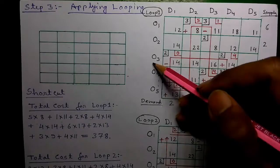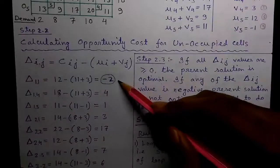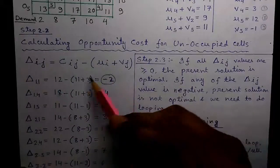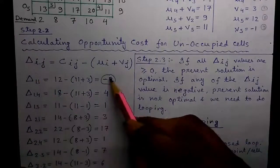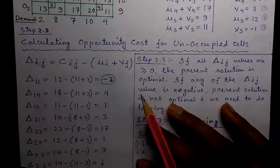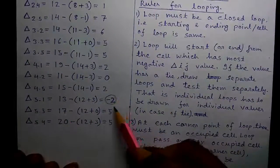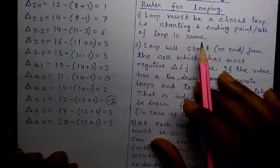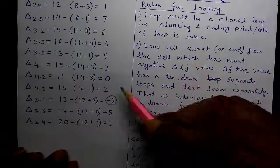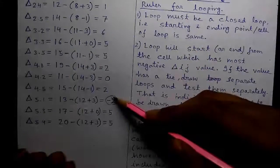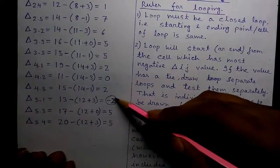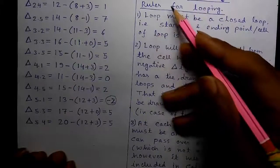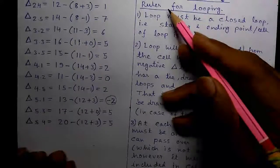Earlier, while calculating all the del_ij values, we found that at the del(1,1) position there was a negative value, and also at the del(5,1) position there was another negative value. Both values are the same — both are minus 2 — so there is a tie. In case of a tie, you need to draw two separate loops and calculate them separately, which we will do right now.